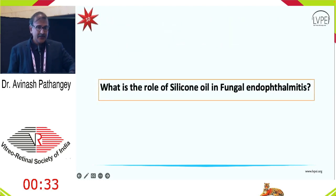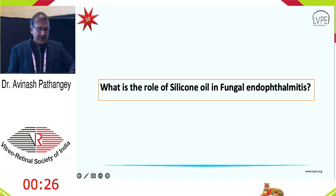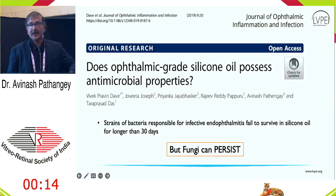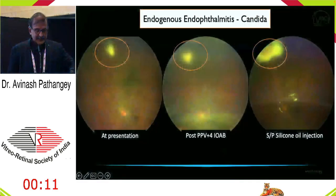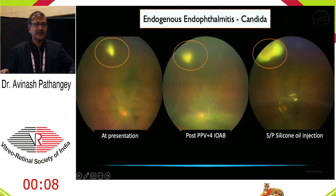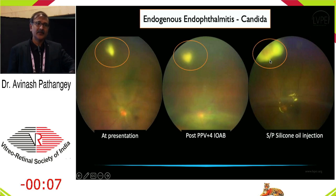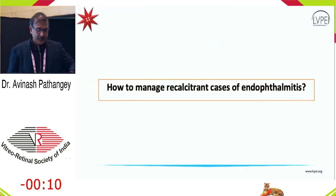Can silicone oil help in fungal endophthalmitis when injections and vitrectomy are insufficient? In vitro, we found silicone oil helps more against bacteria, but fungi continue to persist. As a proof of concept, a patient with focal endogenous endophthalmitis received vitrectomy, intravitreal antibiotics, and silicone oil — and in the third photograph you can see progression of infection underneath the silicone oil. So silicone oil may be useful in certain bacterial cases but may not be very helpful in fungal endophthalmitis.